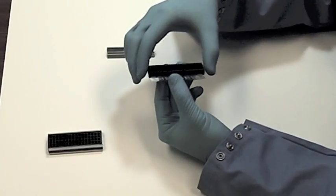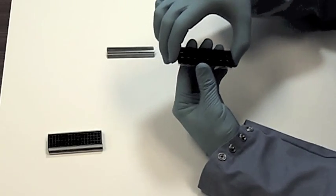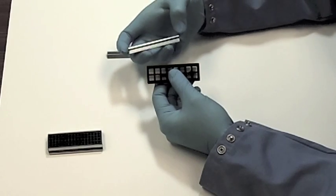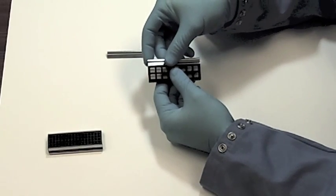When assembled, the ProPlate system forms discrete subchambers on top of the microscope slide. Many formats are available. Shown here is a 16-chambered system.